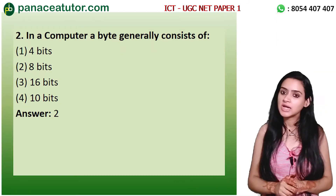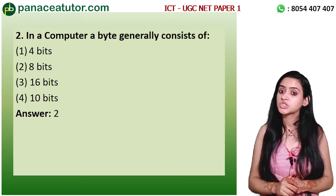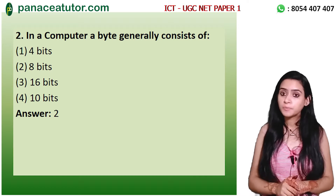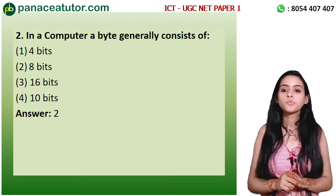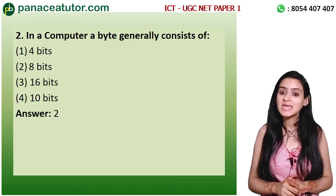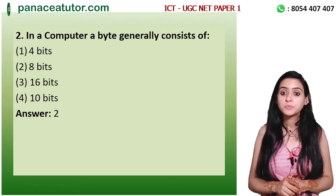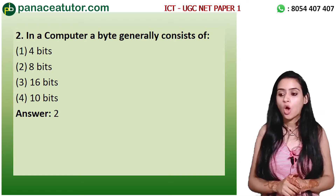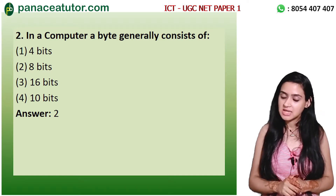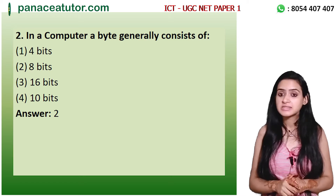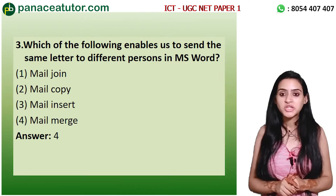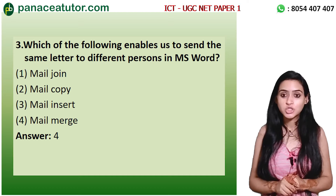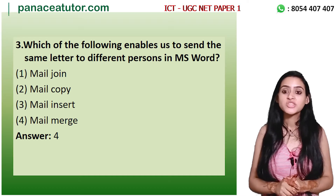Question 2 is related to computers. The question says: In a computer, a byte generally consists of — Option A: 4 bits, Option B: 8 bits, Option C: 16 bits, Option D: 10 bits. The correct answer is Option B — 8 bits.